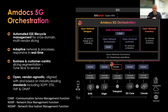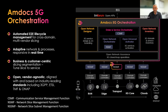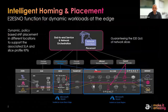Then we have the NSSMF - Network Slice Subnet Management Function - which talks to and delegates to the domain controller, understanding constraints of the domain - whether RAN, transport, or core - and sends configuration parameters to the domain controller to complete the instantiation of the slice. This is the day-zero/day-one process. All three layers also handle the full lifecycle of the slice: scaling, monitoring, changing parameters, and adjusting bandwidth or delay.